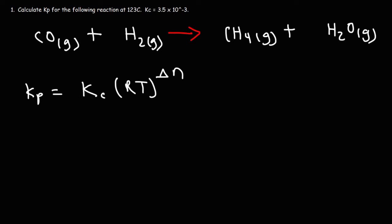Now, you might be wondering, what is R? In this example, R is not 8.3145 joules per mole per Kelvin, but rather, it's 0.08206 liters times atm divided by moles times Kelvin.